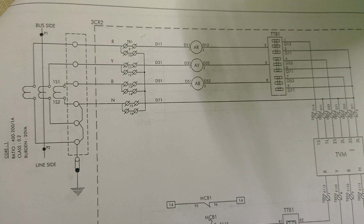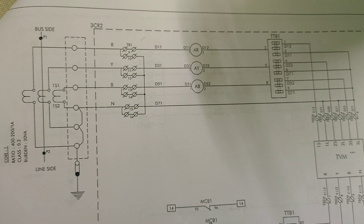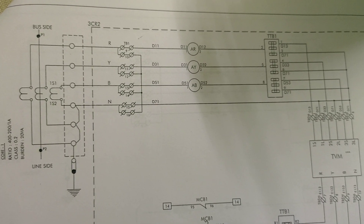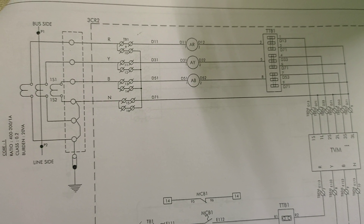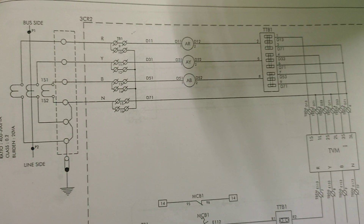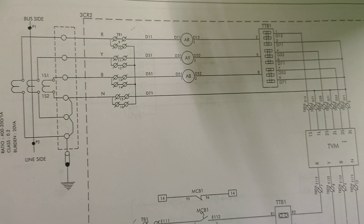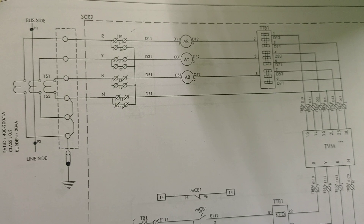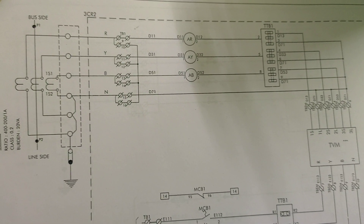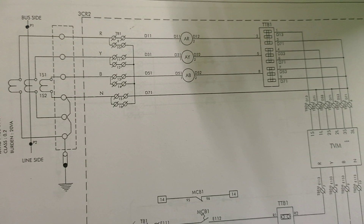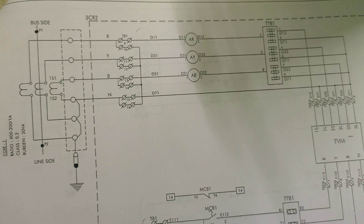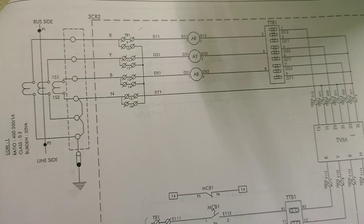We have already discussed about current transformers: what they are, why they are installed in the line, how the CT secondary is connected for metering and protection purposes, and how the spare core is handled. Please see my previous video for details about current transformers, their protection class, saturation voltage, fault current, and VK voltage calculations.